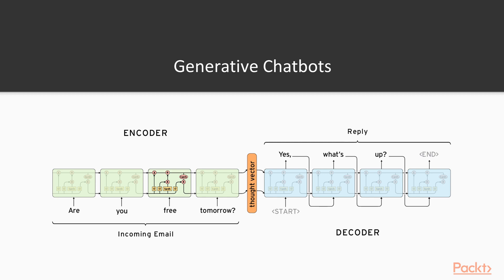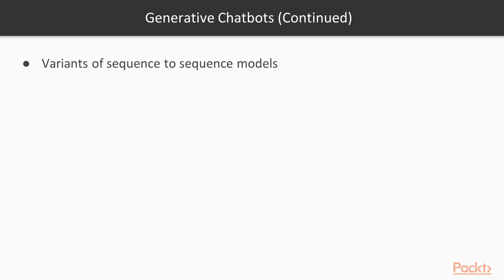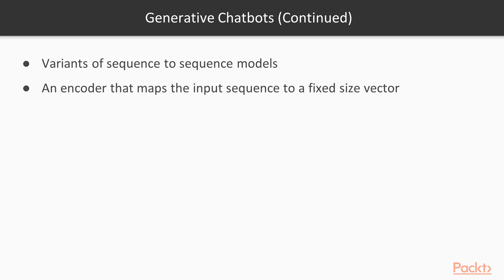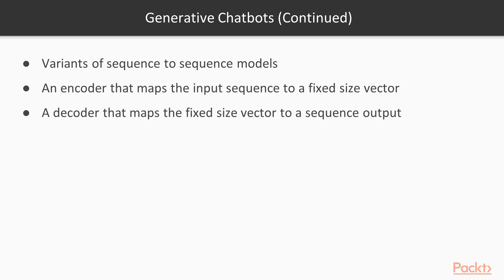Here is the architecture of a sequence-to-sequence model. Generative chatbots are variants of sequence-to-sequence models. An encoder maps the input sequence to a fixed-size vector. A decoder then maps the fixed-size vector to a sequence output.